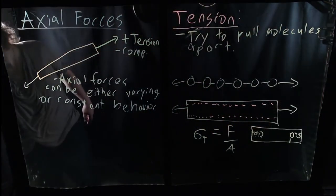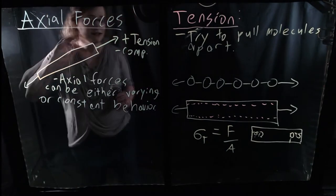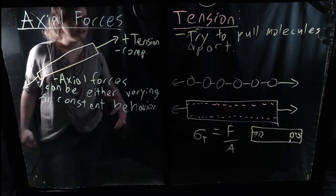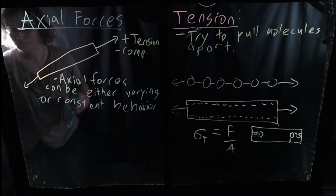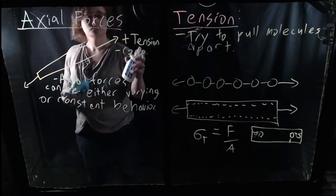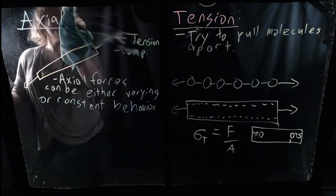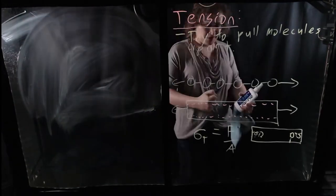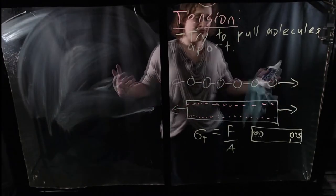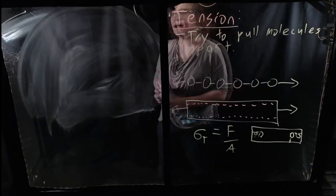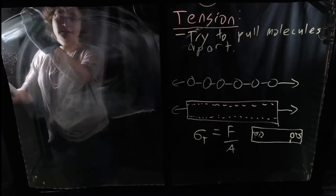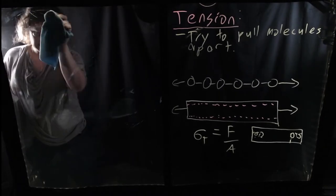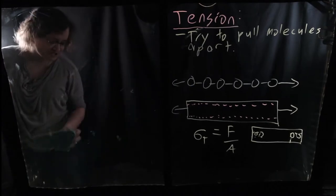What about compression? We're going to spend more time talking about compression today because in some ways it's a bit more complex. The tensile capacity of a member is not really a function of its length. A rope that's 10 feet long or 20 feet long with the same cross-sectional area has essentially the same tensile capacity regardless of length. But that's not the case with compression forces and compression stresses — and we're going to look at that today.